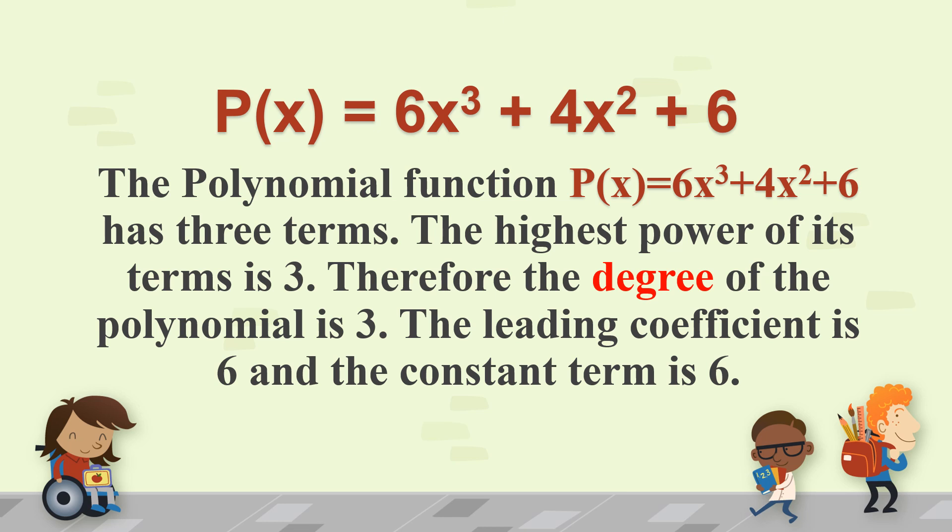The highest power of each term is 3. So if the highest power is 3, therefore the degree of the polynomial is 3. Remember that in the previous discussion, the degree is the highest exponent or the highest power. Now in the given polynomial function, the leading coefficient is 6. This is the number at the beginning of our leading term. That's the leading coefficient. And the constant term is positive 6.